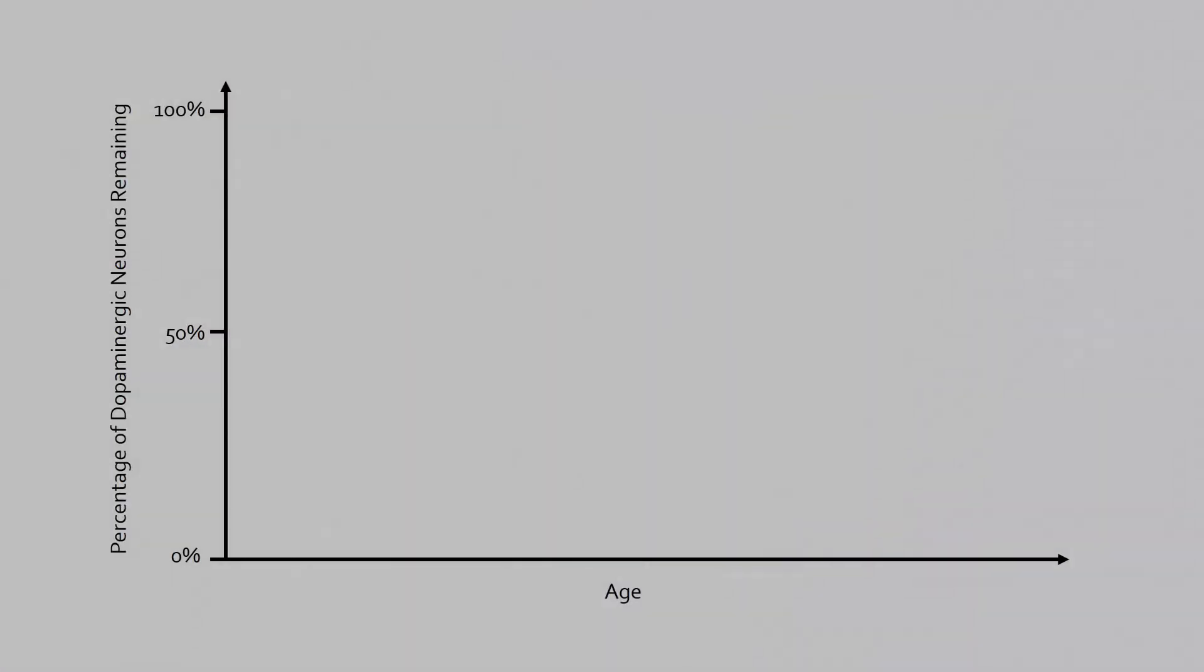In healthy people, these dopaminergic neurons slowly die out as age increases, but in people with Parkinson's, this decrease is dramatically accelerated.